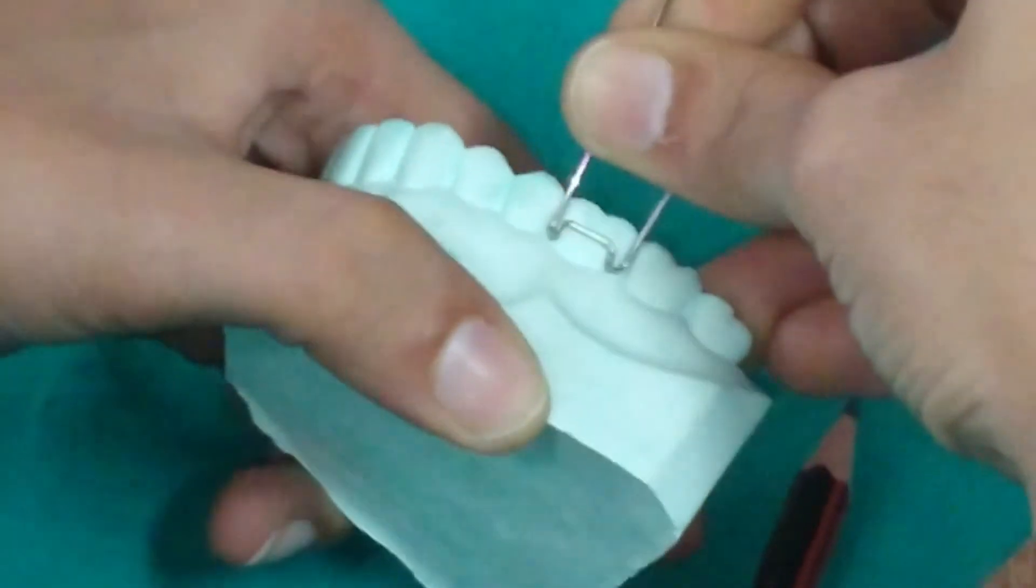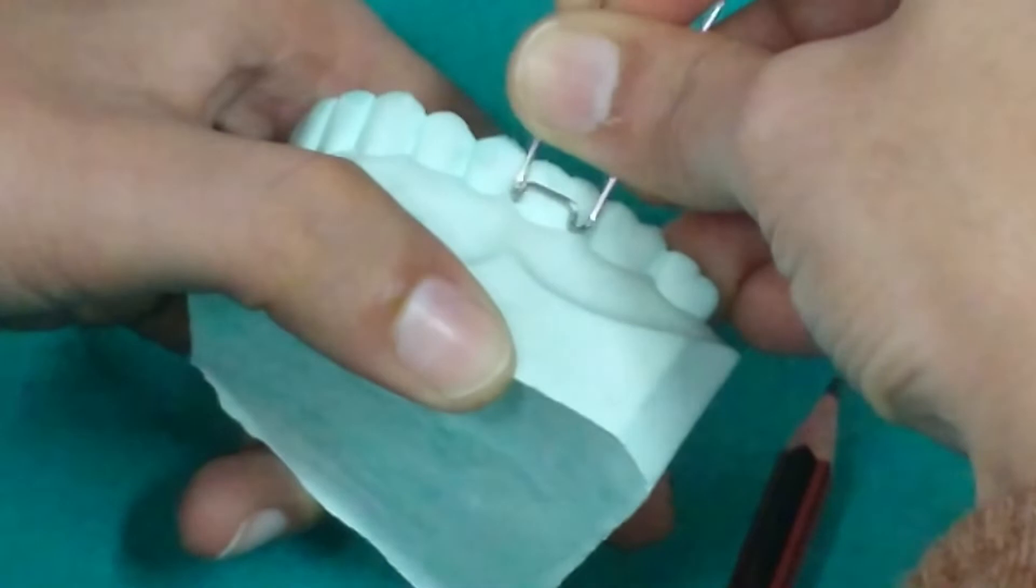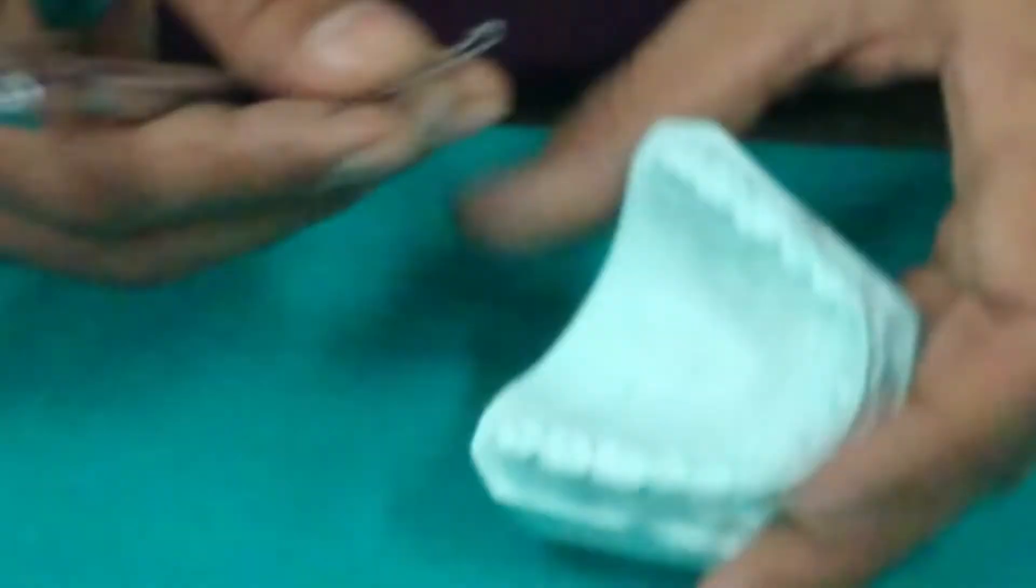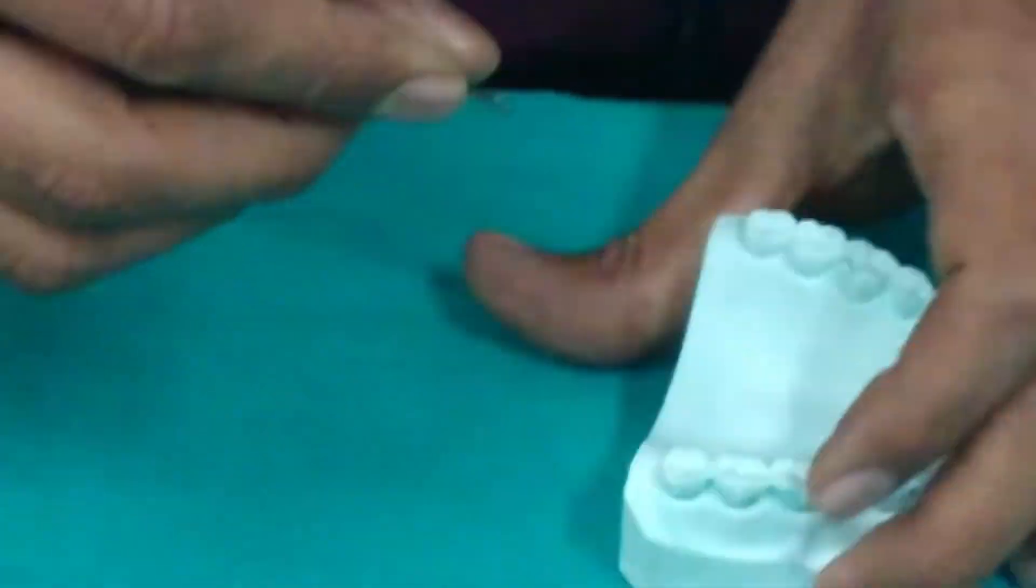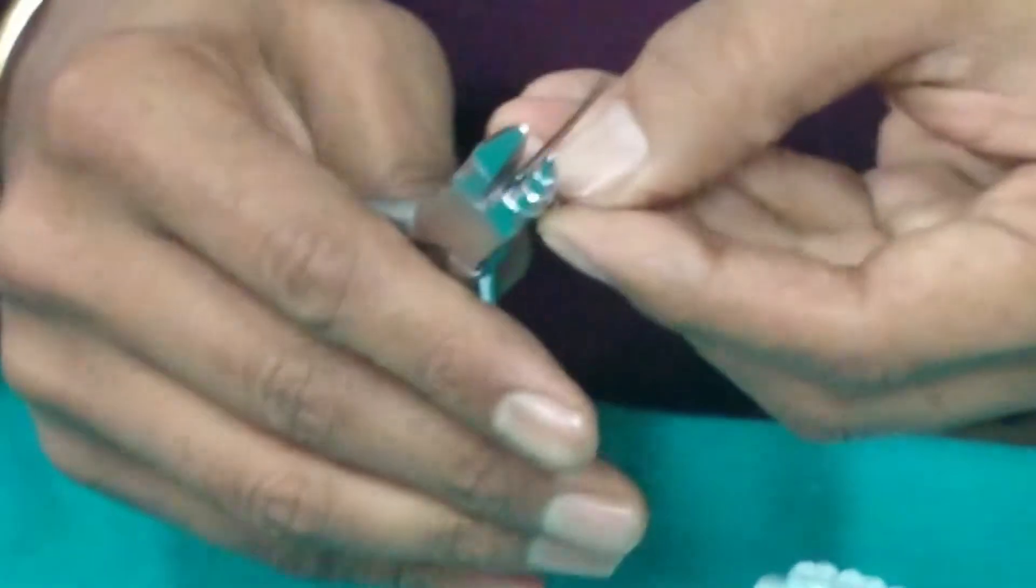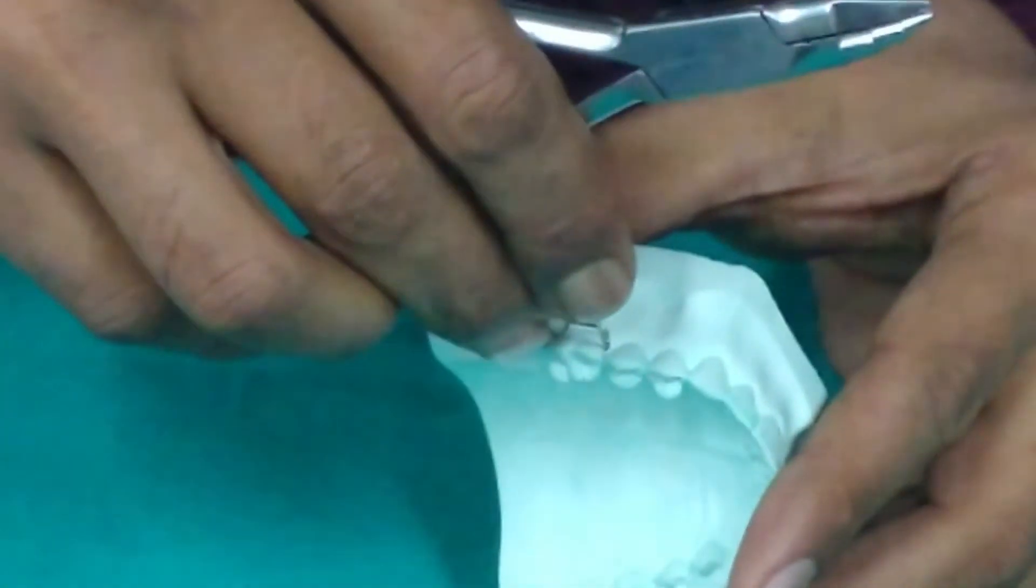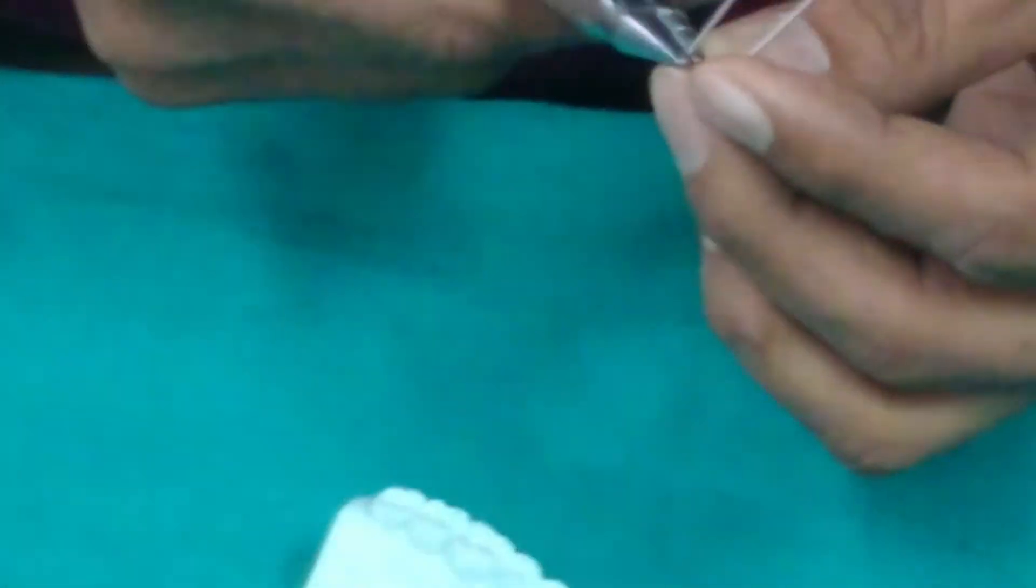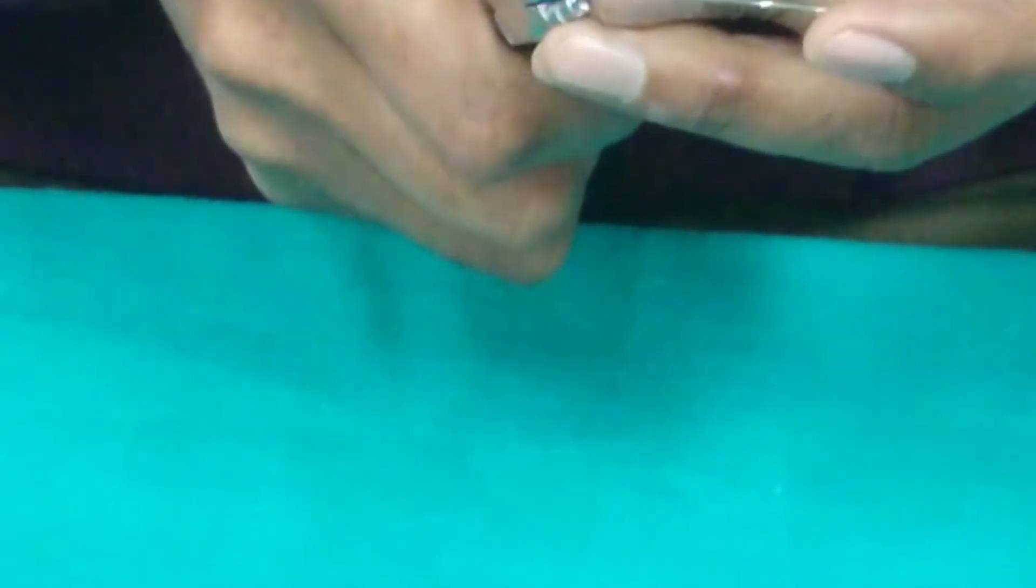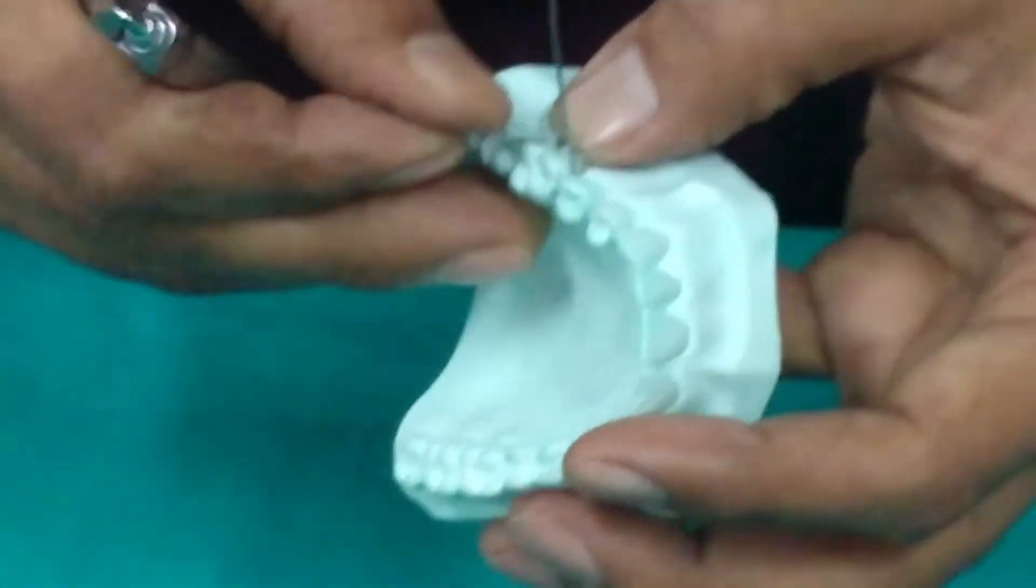Now, we will adapt the retentive arms to the tooth. We are giving a bend which is called the million dollar bend. This bend helps in giving a 45 degree bend of the arrowhead to the retentive arms.